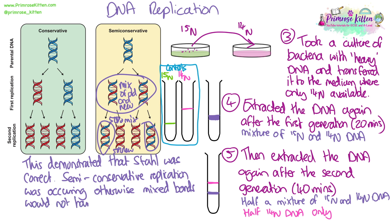If Meselson was right and conservative replication was taking place, we wouldn't see any mixed bands at all — we would see light and heavy bands in both generations, with perhaps a gradual disappearance of the heavy band. But because semi-conservative replication occurs, we always have that heavy chain as part of the new DNA every generation. When interpreting results like these, you need to be able to explain why there is a band in the middle, why that band is thicker, or why the second generation shows a light band and a mixed band rather than a light and heavy band, showing that there is always a conserved chain acting as a template, so there will always be a strand from the previous generation's DNA in the new molecule.